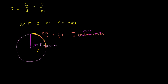We could do another one to make the point clear. If you went all the way around the circle and got back to the positive x-axis, the arc length is now the entire circumference of the circle — 2πr, which is the same thing as 2π radii. And we would say that the angle subtended going all the way around the circle is 2π radians.